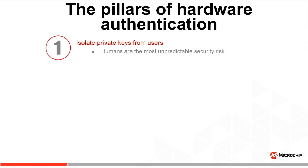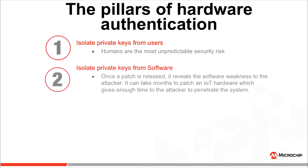The first concept is to isolate private keys from users. Humans are the most unpredictable security risk. The second concept is to isolate private keys from software. Once a patch is released, it reveals the software weakness to the attacker. It can take months to patch an IoT device, which gives enough time for an attacker to penetrate the system.